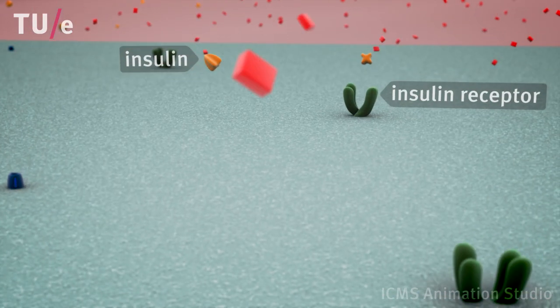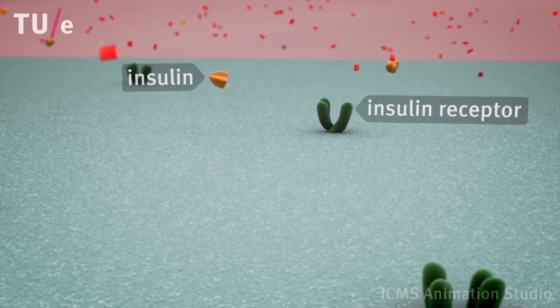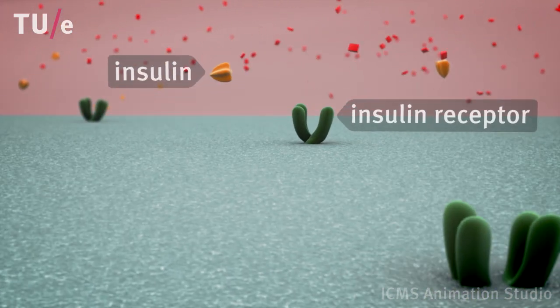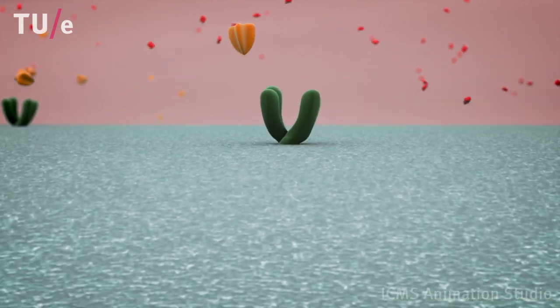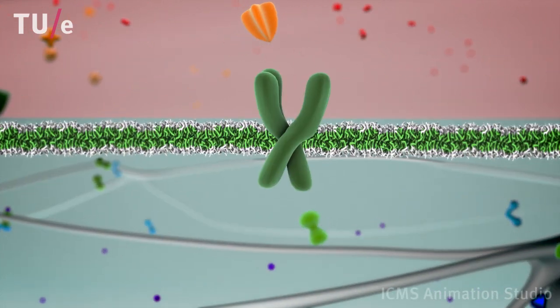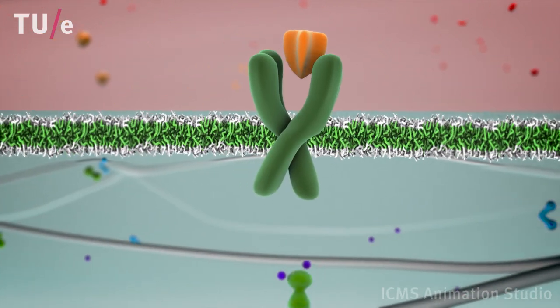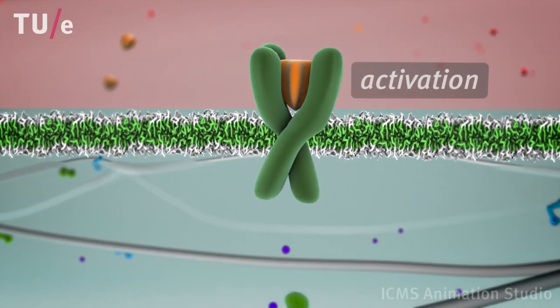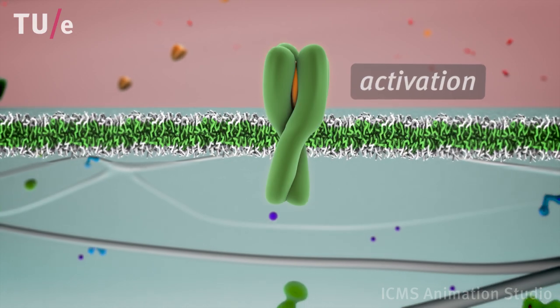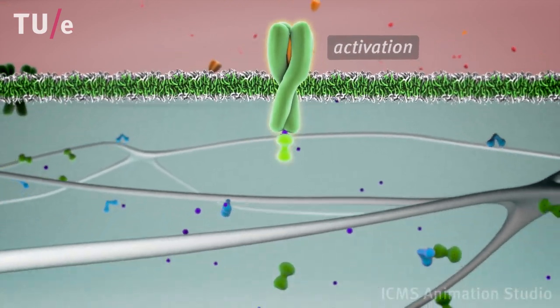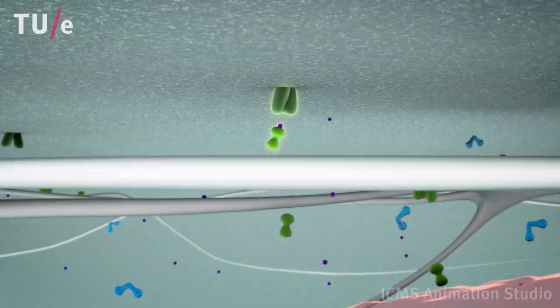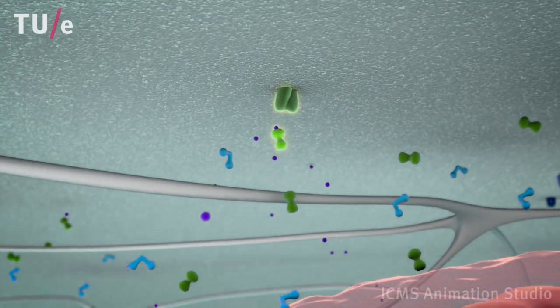After a meal, the pancreas secretes insulin into the bloodstream in response to increased blood glucose levels. At the skeletal muscle cell, insulin binds to the insulin receptor, which will trigger a series of events inside the cell.